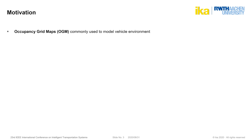Now let's take a look at why a new approach for this task seems necessary. Automated vehicles need a representation of the environment that can be taken as input for behavior planning, for example. Occupancy gridmaps are one popular type of representation. OGMs can be computed based on different methods and different types of sensors, but so far these approaches come with various drawbacks, which I would like to summarize.